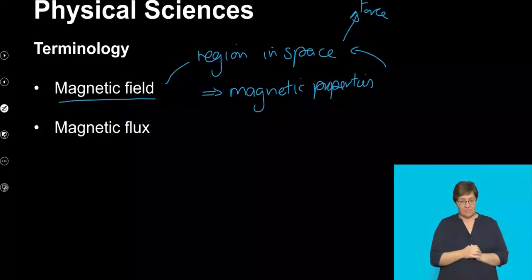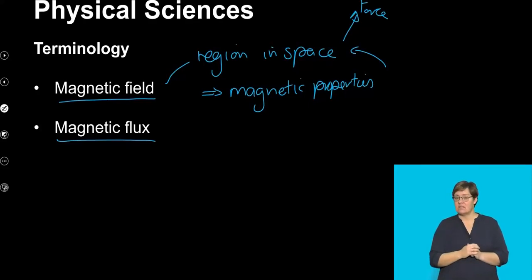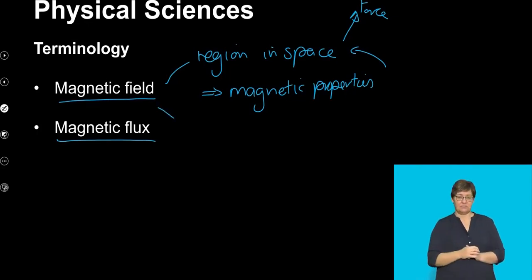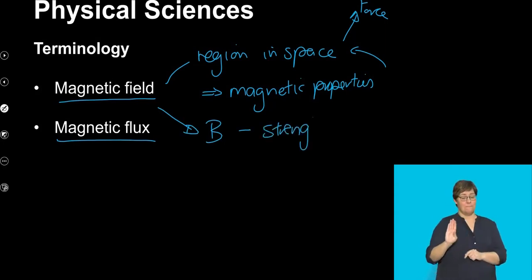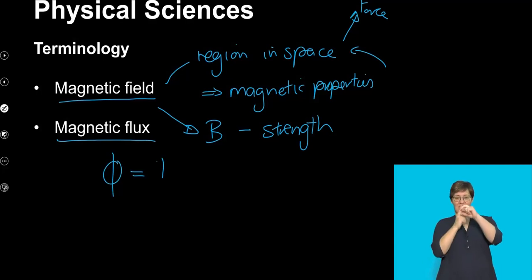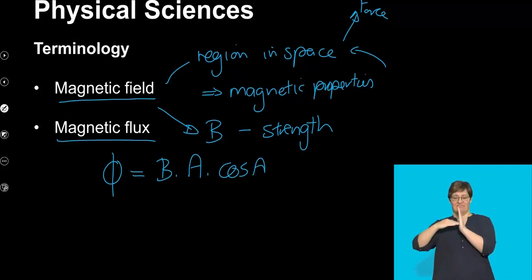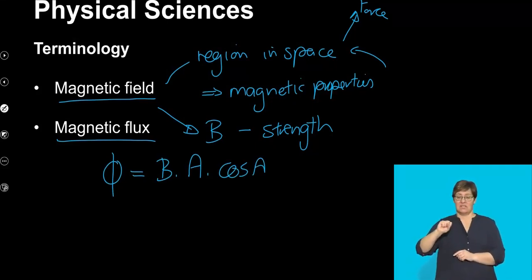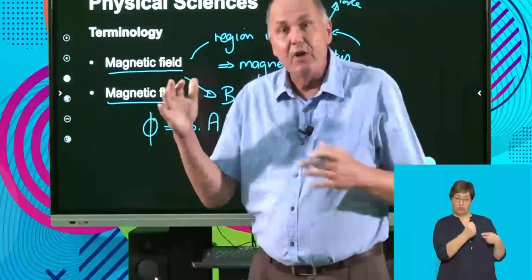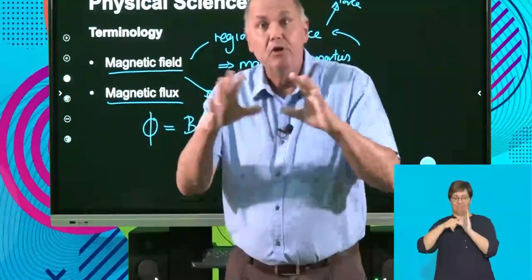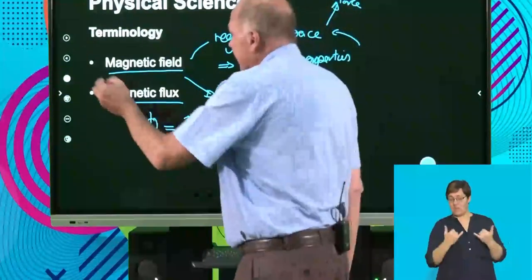There's a follow-up idea to magnetic field, and that's magnetic flux. Magnetic field strength is represented by the letter B. Flux has the symbol phi, and it's the relationship between the magnetic field strength and a perpendicular area through which those field lines pass. Magnetic flux is made up of two components: the magnetic field strength B and the area through which the field lines pass.